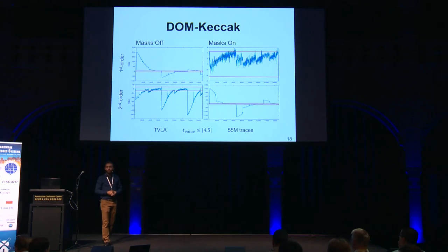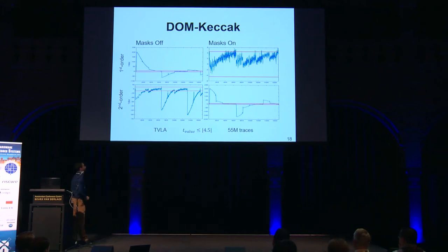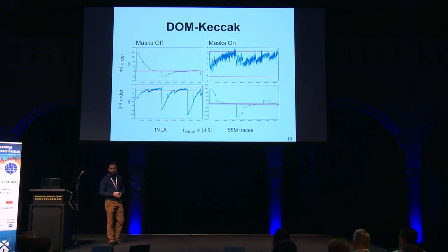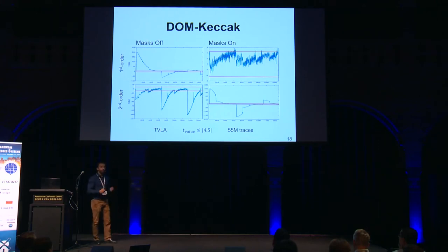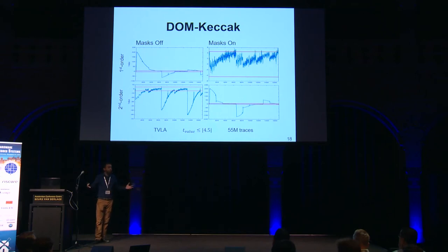We then evaluated this implementation with a Test Vector Leakage Assessment using 55 million traces. Testing first with the countermeasure switched off, we see huge leakage — the T-value (the blue graph) is way beyond the red threshold. When we switch on the countermeasure, we see small leakage in the first order, which should have no leakage at all. It is small, but we cannot determine whether it could lead to an attack.